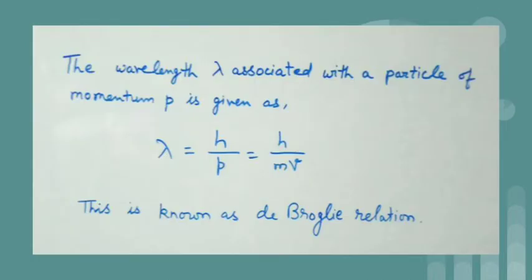De Broglie suggested that the wavelength lambda associated with a particle of momentum p is given as lambda is equal to h by p which is also equal to h by mv. This is known as the De Broglie relation.